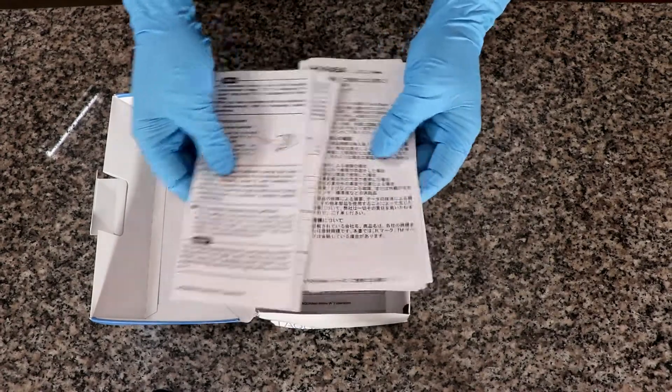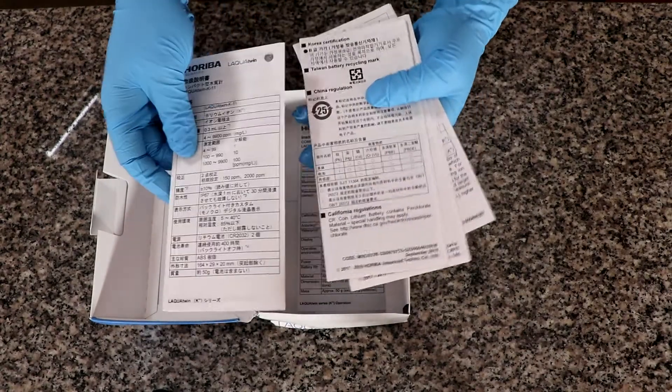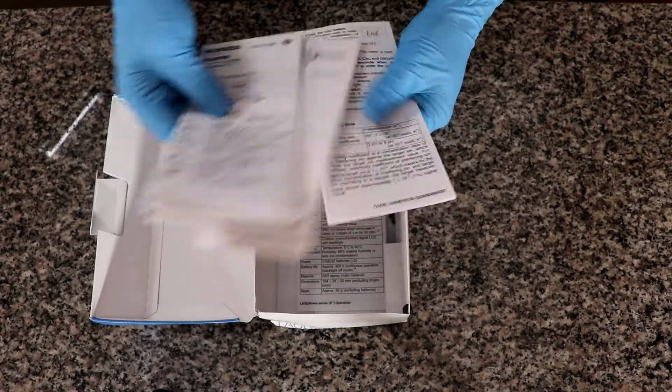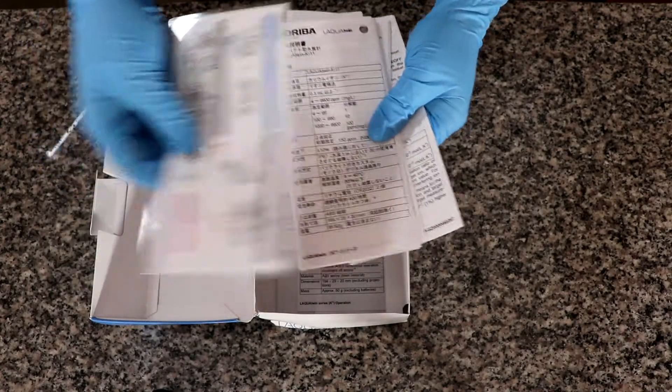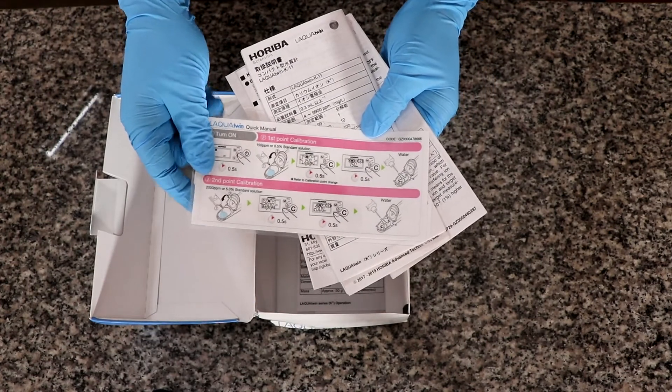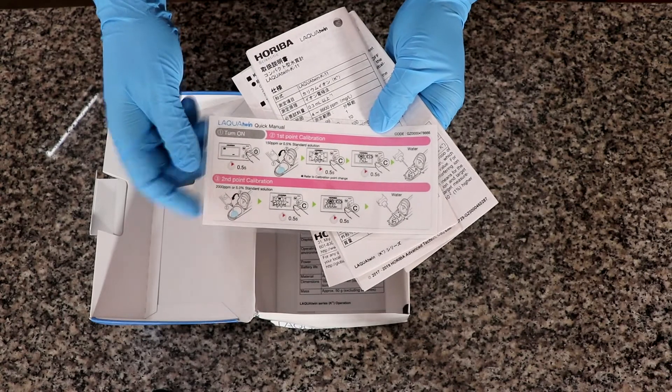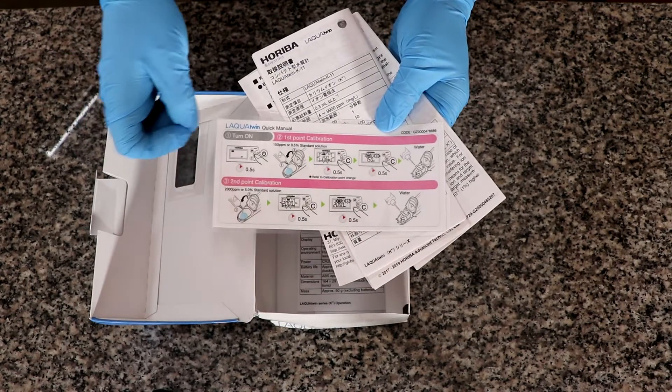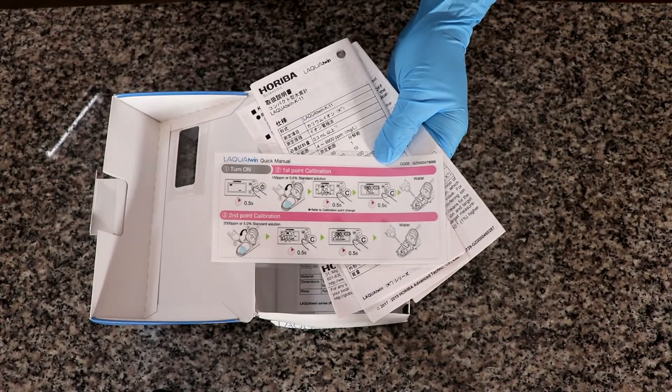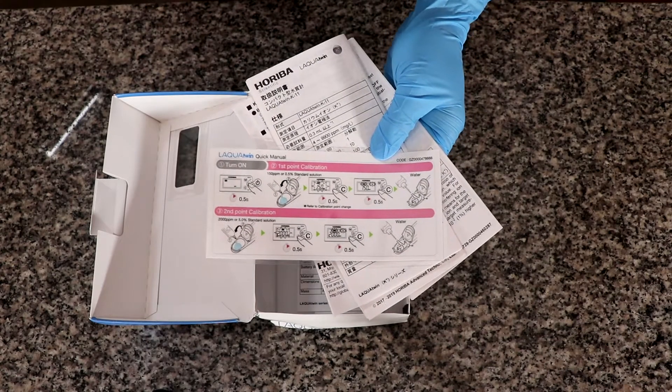This is the case and we have the instruction manuals which tell us everything we want to know about the electrode in Japanese and in English. We have this small guide which is a quick start guide that is also laminated so you can have it while you work and use it as a reference, for example to perform the two point calibration process that we will be performing shortly.